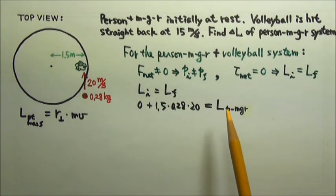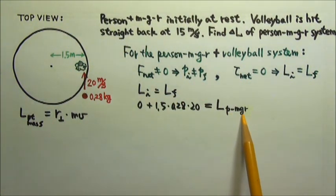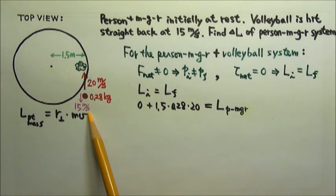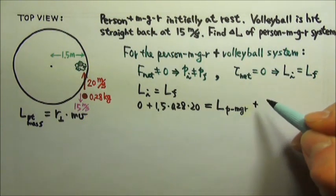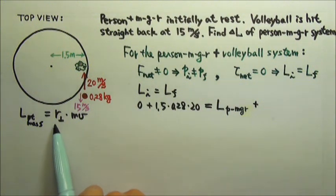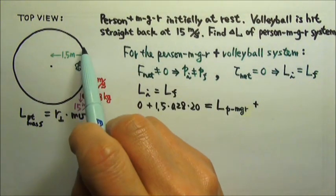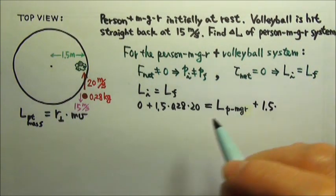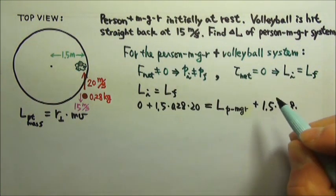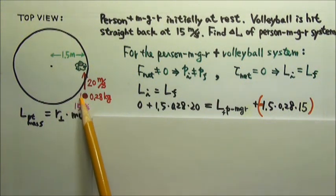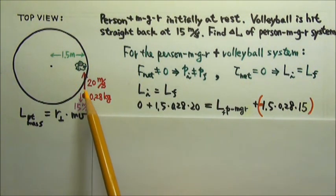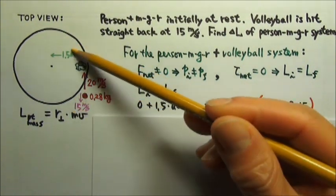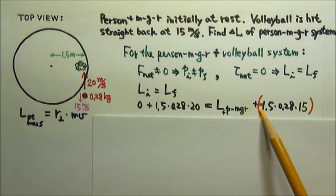After the ball is hit, we do not know the angular momentum of the person's merry-go-round system, but we do know that the volleyball gets hit straight back at 15 meters per second. So the final angular momentum of the volleyball would be the perpendicular r times mv. The distance between the line of motion and the axis is again 1.5 meters, times the mass 0.28, times the final velocity of 15. Because the direction goes back the other way, the final angular momentum of the volleyball is clockwise, so we make it negative.